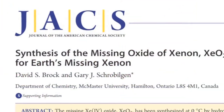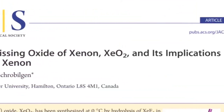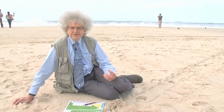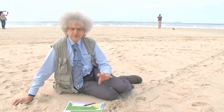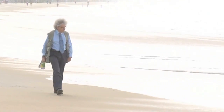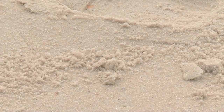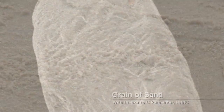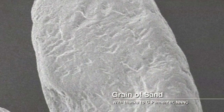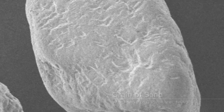What this paper was suggesting is that xenon dioxide could be incorporated into silicon. What they mean by that is that just occasionally in the silica structure, instead of having an SiO4 unit, you would have an XeO4 unit.